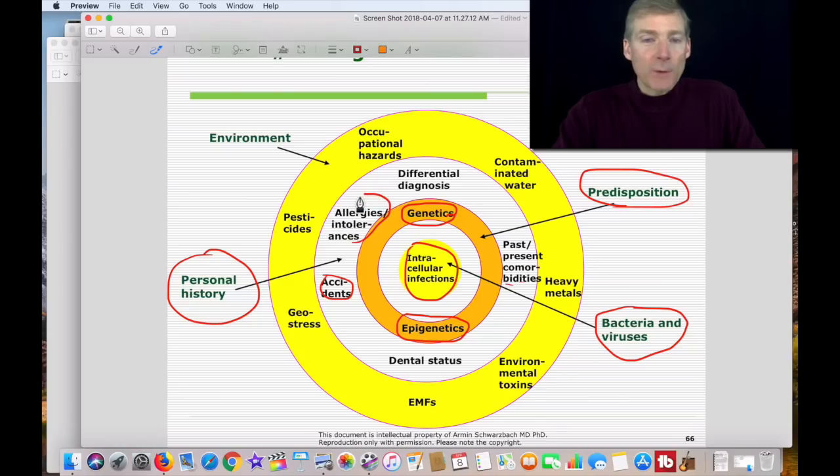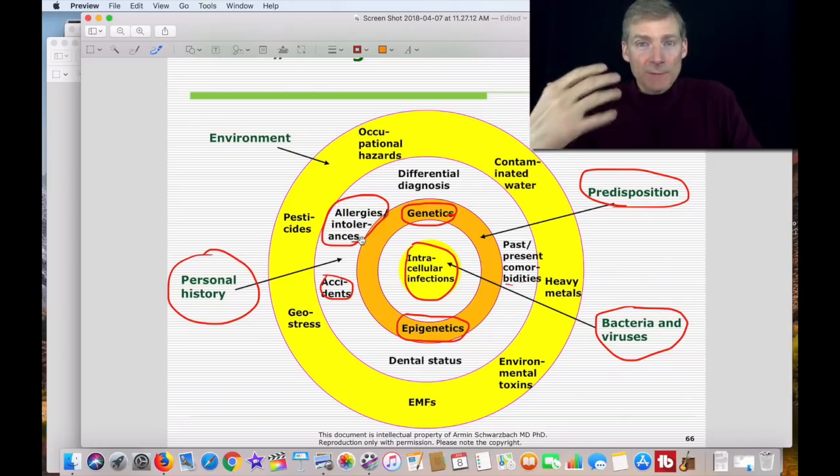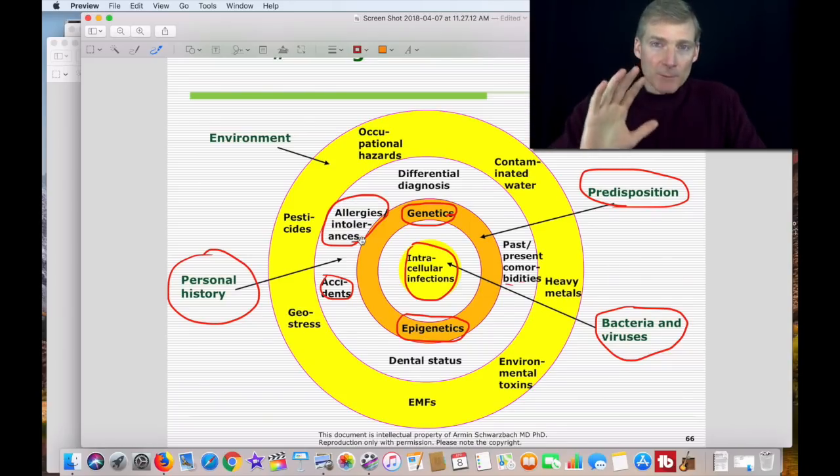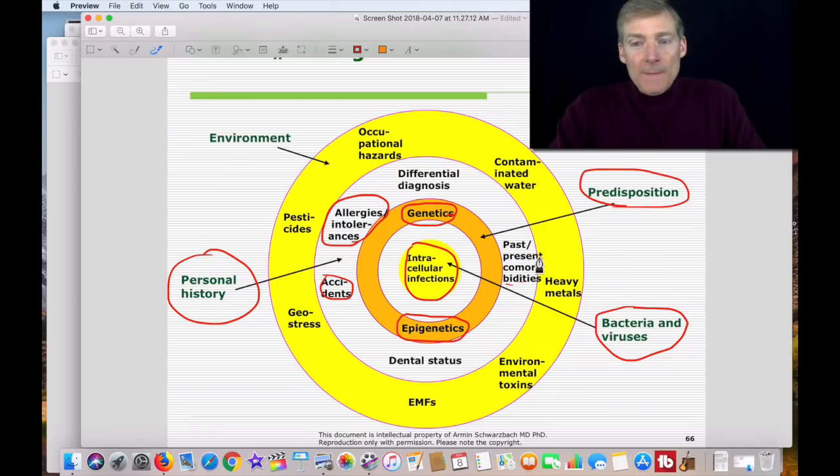Allergies and intolerances that you've acquired from maybe eating too much wheat, too many eggs, too much soy. So you can develop a food allergy because your body's just done with these foods.